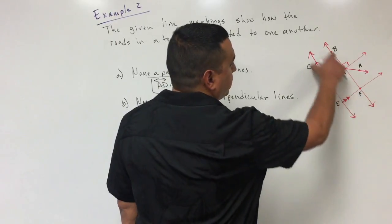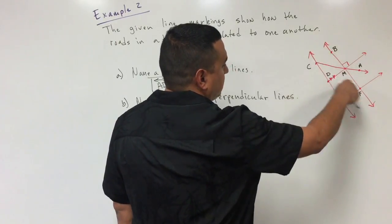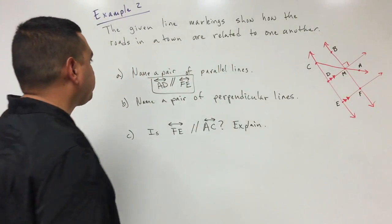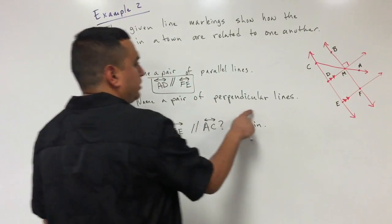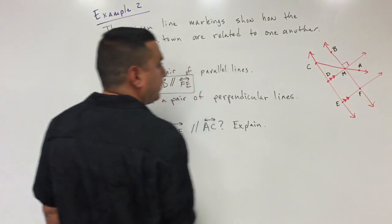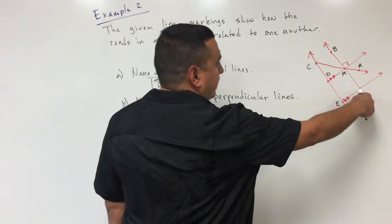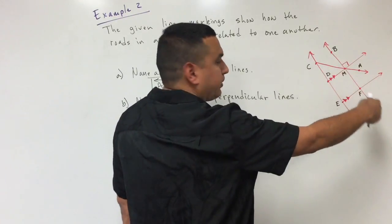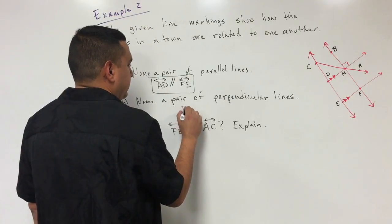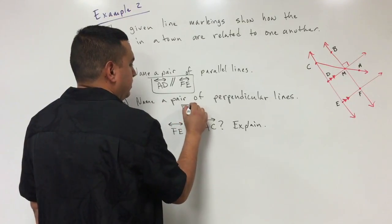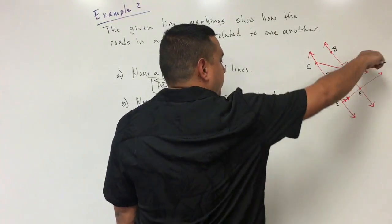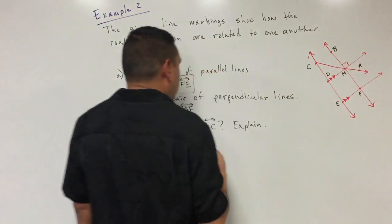I cannot assume that lines CE and BF are parallel. For perpendicular lines, the little square box is the symbol, so looking at this line — it has three points but I just need two of them — I'll call it line BF. Because of that box, line BF is perpendicular to line AD.